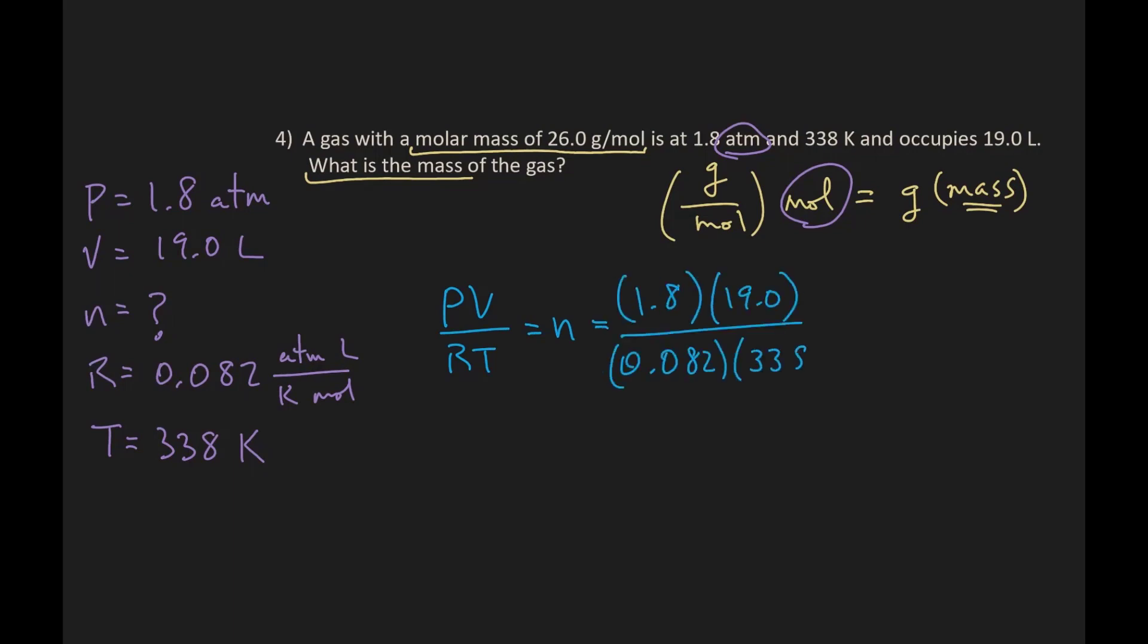So again, as before, PV over RT gives us the number of moles, so we plug in our values of PV and RT. Now we have the moles, and so we also have our molar mass.